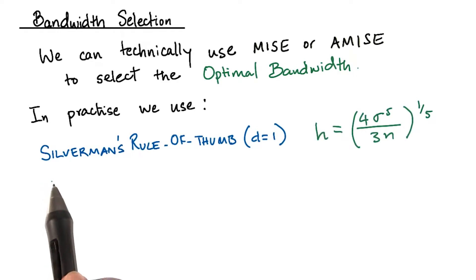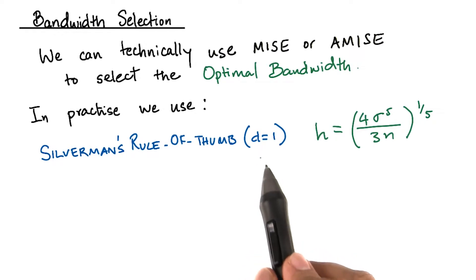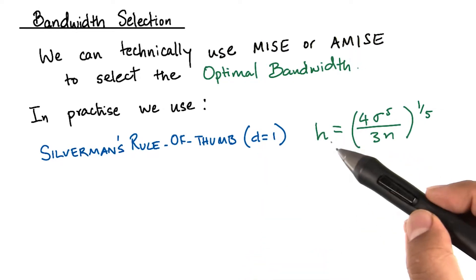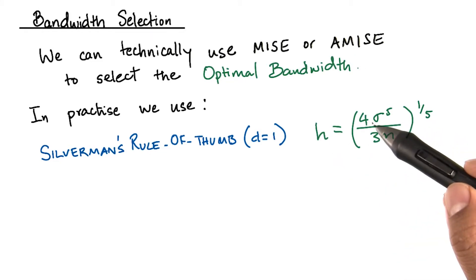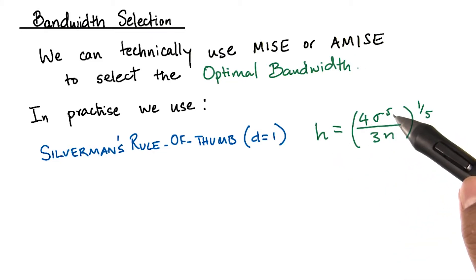So the first rule of thumb is given by Silverman's rule of thumb. This works only for one-dimensional data. The optimal bandwidth is given by h, which is 4 times sigma raised to the power of 5, divided by 3n, the entire thing to the 1/5 power.